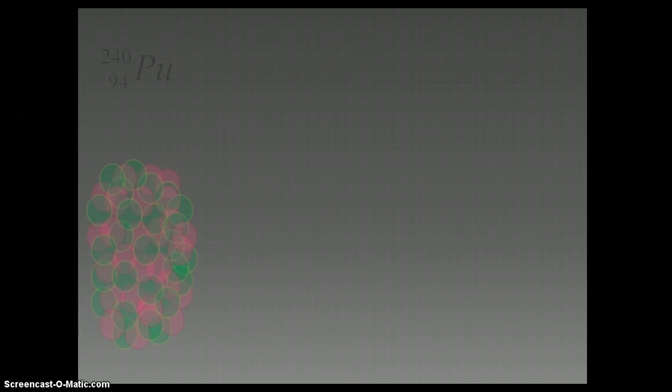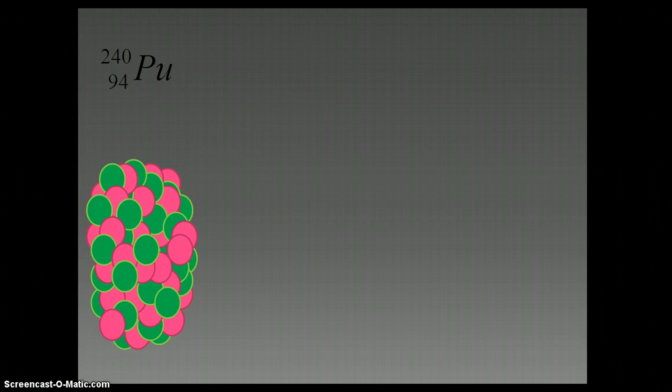I'll explain what alpha decay is first. Let's say we've got plutonium, an isotope of plutonium, plutonium-240. When an object or element undergoes alpha decay, a helium nucleus is released.